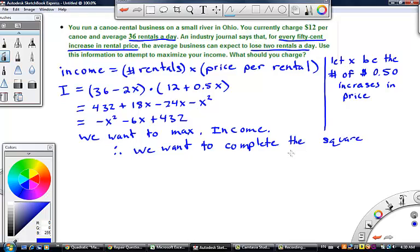Now why do we want to complete the square? Well it's because we want the vertex. So to get the vertex we're going to complete the square. So we factor out the negative. We get x squared plus 6x plus 432.